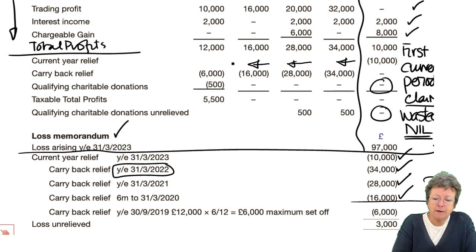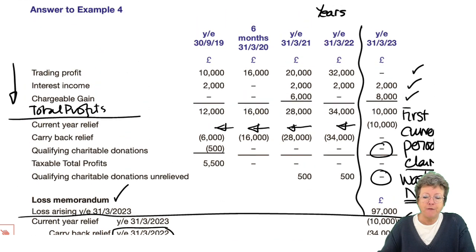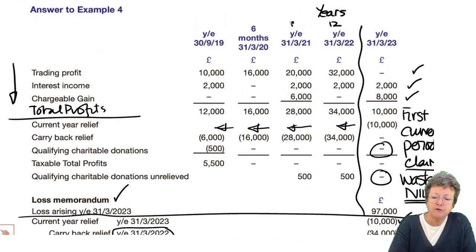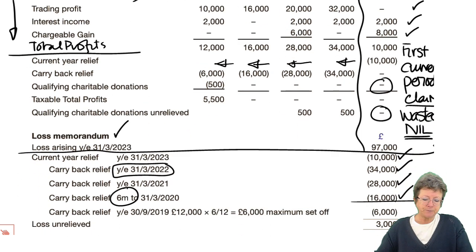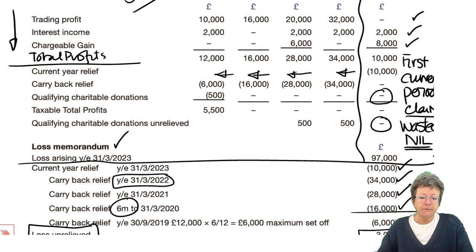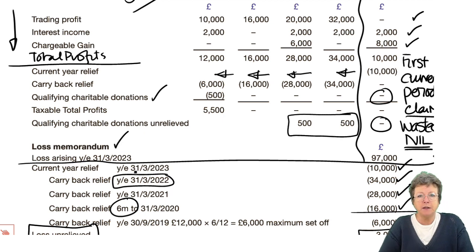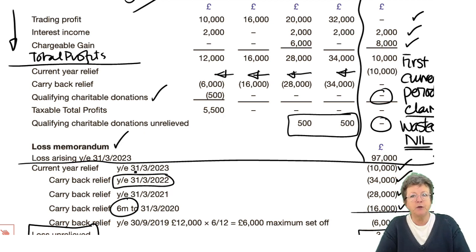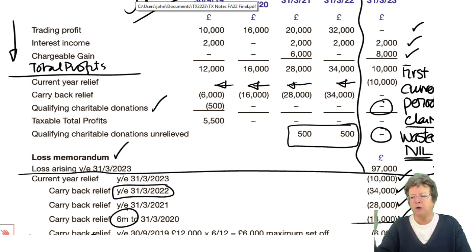We can then carry back another six months, because the rules are we can carry back 36 months — that's 12, 12, 6, and then another 6. Whatever's left is unrelieved — nothing we can do with that. Put your QCDs in; if they are unrelieved, just make a note of them at the bottom. There is a loss relief claim for unrelieved charitable donations, but it's outside the scope for this exam.